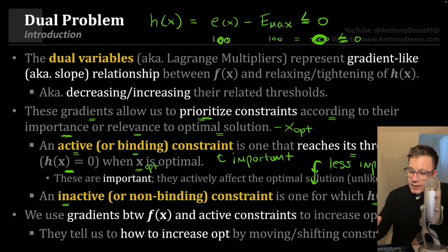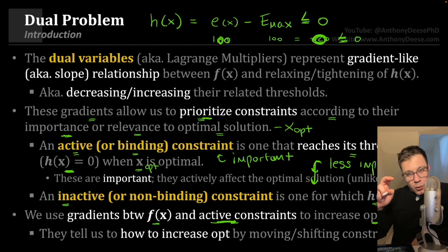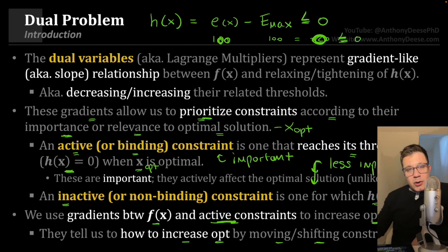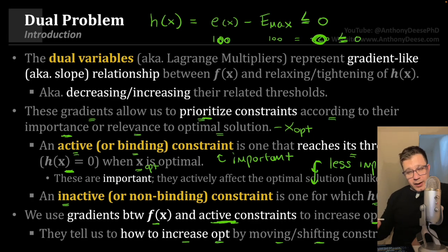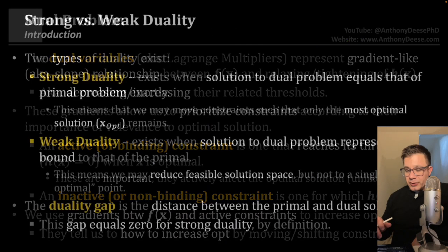We use these gradients — the Lagrange multipliers — between f of x and the active constraints to increase optimality. The active constraints are the more important ones, and they tell us how to increase optimization by moving or shifting these constraints. So in the dual problem, instead of moving the decision variables, what we're actually doing is moving the dual variables and adjusting how the constraints — especially the active constraints — affect the optimal solution.